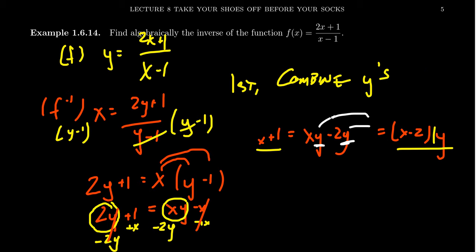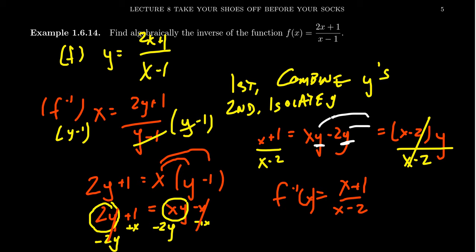The next part is then, once you have the y's together, now you're going to isolate the y. That is, you want to get everything away from the y. Now, the thing attached to the y is an x minus 2. And it's attached to y via multiplication. So we perform the inverse operation, which is division, here. So the x minus 2s will cancel. And then you're going to get y equals x plus 1 over x minus 2. And this would be the inverse function of this linear fraction right here.